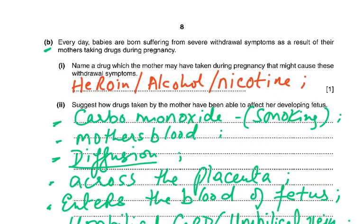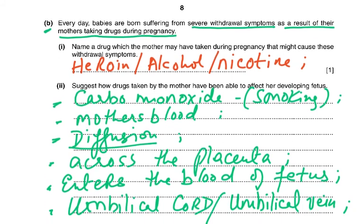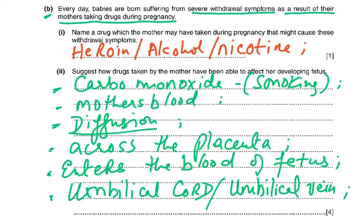Every day babies are born suffering from severe withdrawal symptoms as a result of their mothers taking drugs during pregnancy. Name a drug the mother may have taken: she could have been a heroin addict, an alcohol addict, or a nicotine addict from smoking. Suggest how drugs taken by the mother have been able to affect her developing fetus: carbon monoxide in the mother's blood will diffuse across the placenta, enter the blood of the fetus via the umbilical vein, which carries oxygenated blood from the placenta to the fetus.